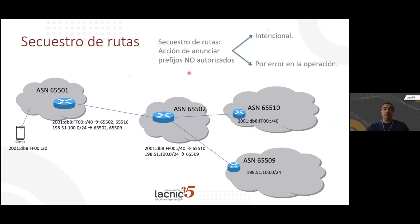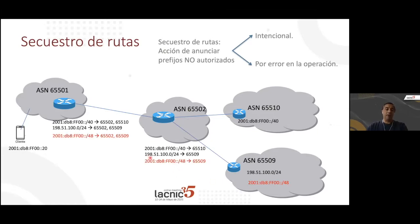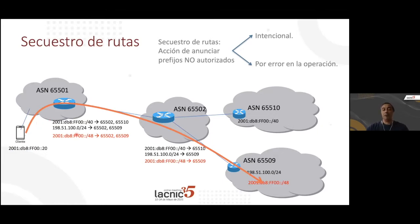Now, what happens if BGP doesn't have its own mechanism for detecting that what you announce is actually appropriate? What happens if somebody starts announcing a block in BGP, such as 2000-something more specific in /48? This /48 will reach autonomous system 65501 because the more specific prefix takes priority. So when the client wants to get to that address, instead of taking the previous route, traffic will be sent to another autonomous system.